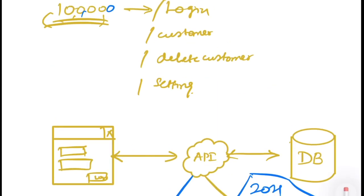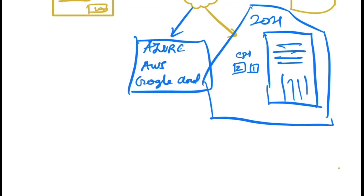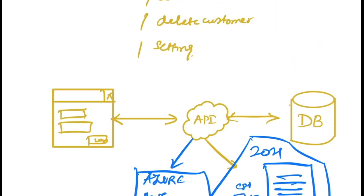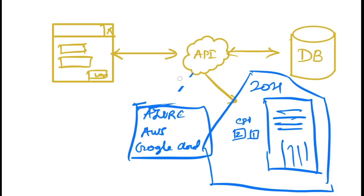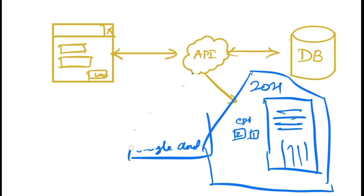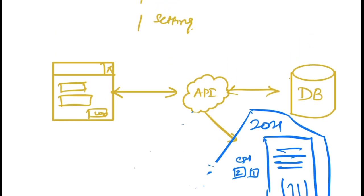If you're not concerned about more than 10,000 users, you don't even have to consider Azure, AWS, or Google Cloud, but mostly that's not going to be the case. The database, since user details are coming from a stored database, can be anything — NoSQL, SQL, MySQL, or something similar — wherever it fetches the data. And again, the database is also going to be running on a server.